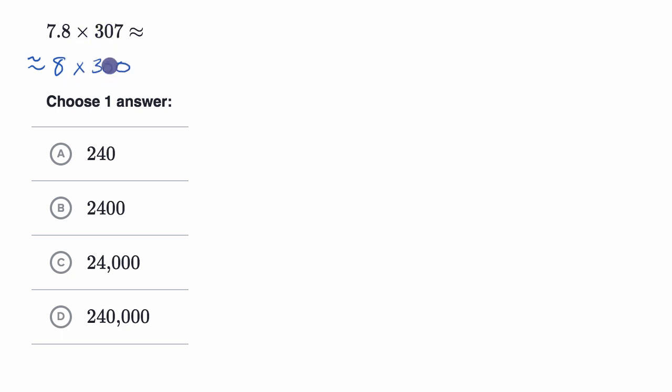Now this isn't going to be exact. It's definitely going to be off, but it's gonna give me a good sense of roughly what 7.8 times 307 is. So what is eight times 300? Well, eight times three is 24. And so eight times 300 would be 2400.